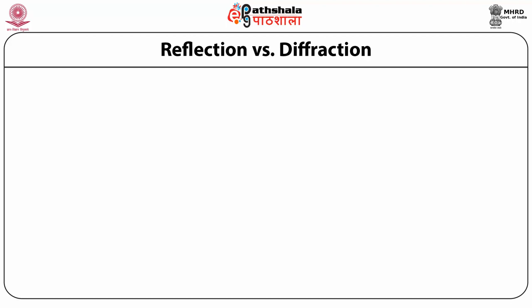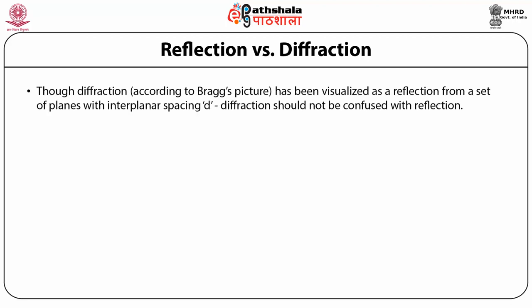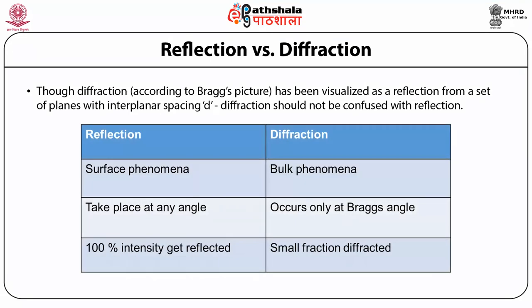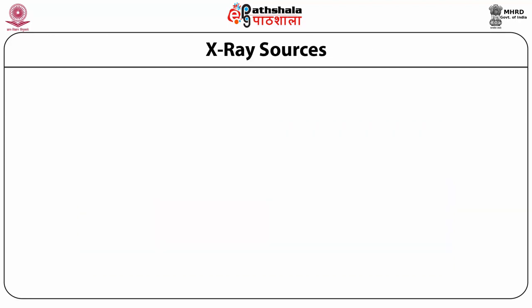Regarding reflection versus diffraction: although diffraction, according to Bragg's picture, has been visualized as a reflection from a set of planes with interplanar spacing D, diffraction should not be confused with reflection. Reflection is a surface phenomenon, while diffraction is a bulk phenomenon. Reflection takes place at any angle, whereas diffraction occurs only at Bragg's angle. In reflection, 100% of intensity is reflected, while in diffraction, only a small fraction is diffracted.